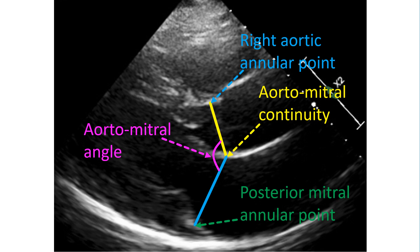Aortomitral continuity can be seen well when the aortic valve is closed, though in this image the faint aortic valve image has been overlapped by the yellow line used for illustration of the aortic annular plane. The blue line illustrates the mitral annular plane.